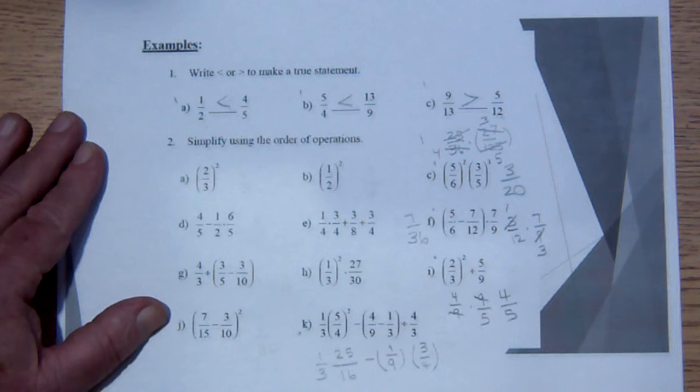So then what we will have is that 3 goes into 3 once, 3 goes into 9 3 times. That's going to be equal to 1 over 12.